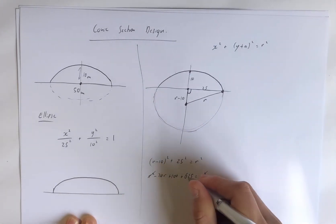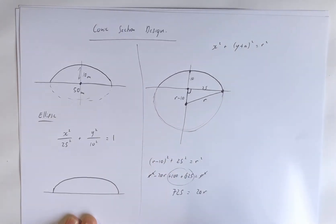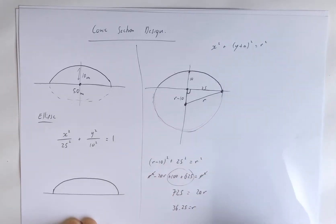Cancel our R squareds, add 20R to the other side, collect those up. We have 725 equals 20R. So if we were to divide by 20, we'd have 36.25 is R.